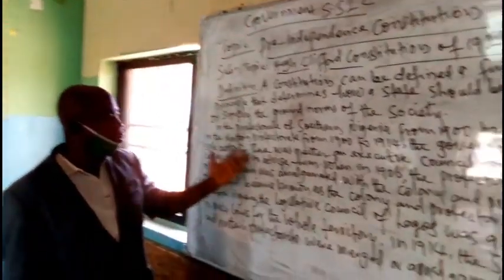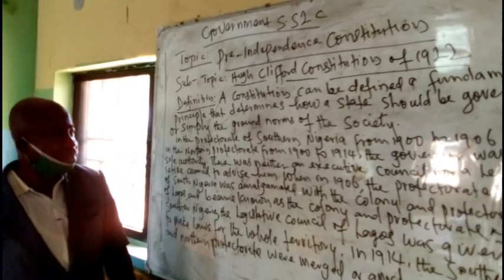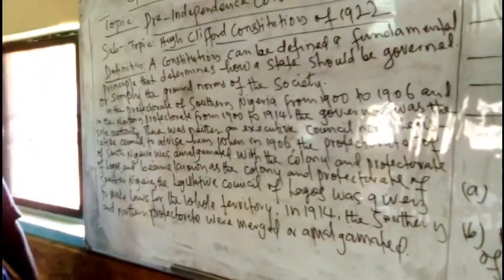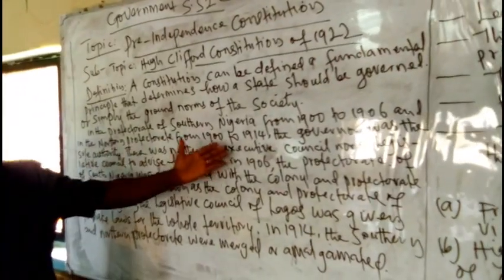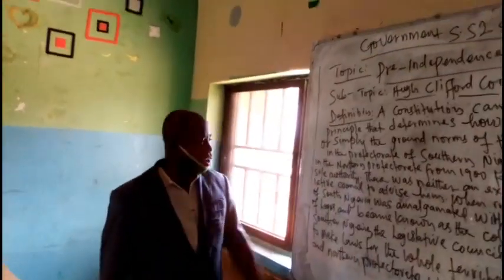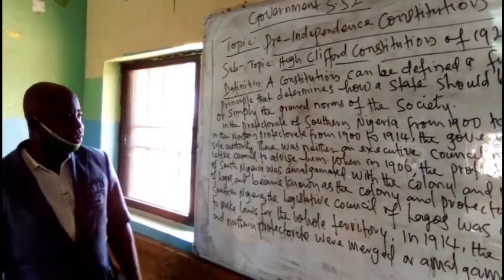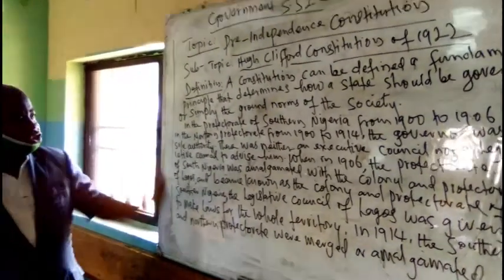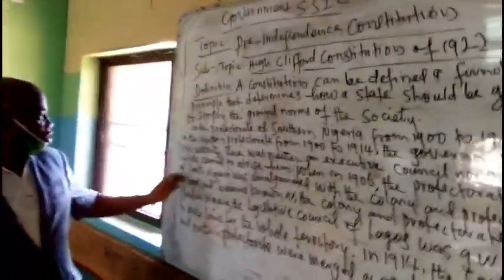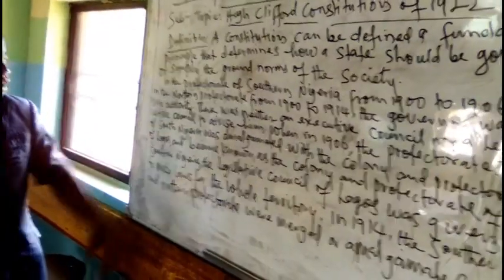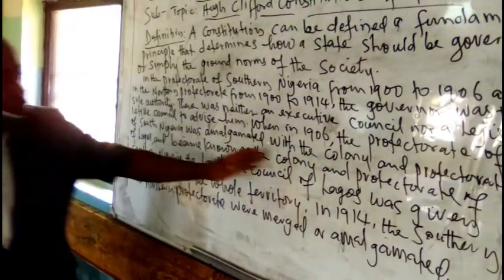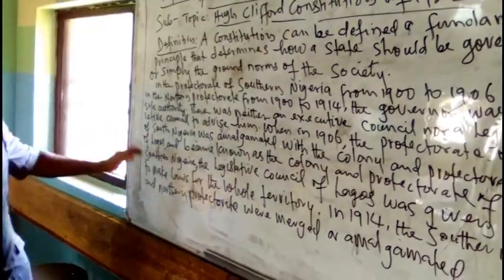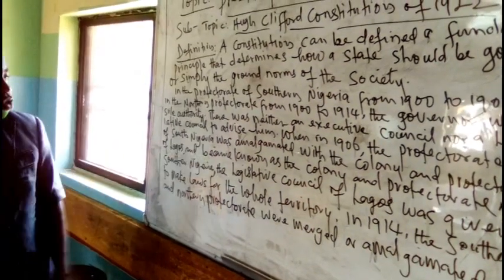Before Nigeria was amalgamated, the governor was the sole administrator. There was neither a legislative council nor an executive council to advise him — he was the sole administrator. He could fire and hire at any time, and used his own discretion to rule the country. In 1906, the protectorate of Southern Nigeria was amalgamated with the colony and the protectorate of Lagos.